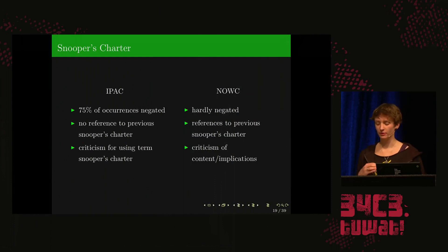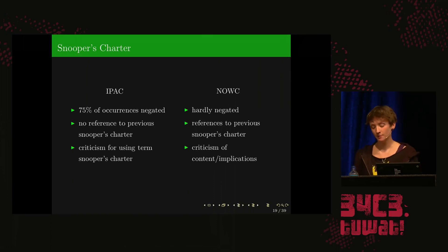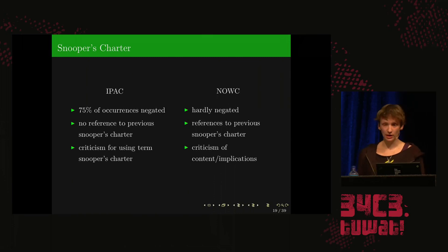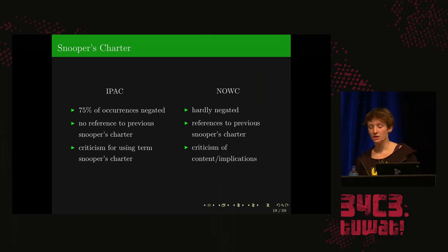In the Investigatory Powers Act corpus, 75% of occurrences of "Snoopers Charter" are negated or contain some form of disapproval. Whereas in the news corpus, the term is hardly negated. The Investigatory Powers Bill entirely lacks reference to a previous Snoopers Charter, but in the newspaper corpus many references are given to the previous Communications Data Bill. In the parliamentary debates, criticism is directed at people using the term, whereas in the newspaper corpus, criticism is directed at the implications of the bill. Overall, "Snoopers Charter" is burdened with negative associations from the previous bill and is strictly avoided or negated in the parliamentary debates.